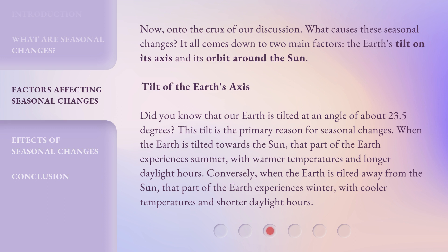Tilt of the Earth's Axis. Did you know that our Earth is tilted at an angle of about 23.5 degrees? This tilt is the primary reason for seasonal changes. When the Earth is tilted towards the Sun, that part of the Earth experiences summer, with warmer temperatures and longer daylight hours.